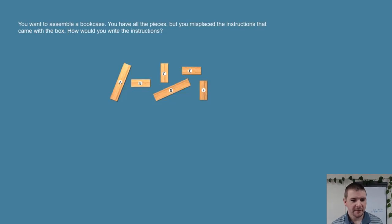Your solve-it question: You want to assemble a bookcase. You have all the pieces, but you misplaced the instructions that came with the box. How would you write the instructions?